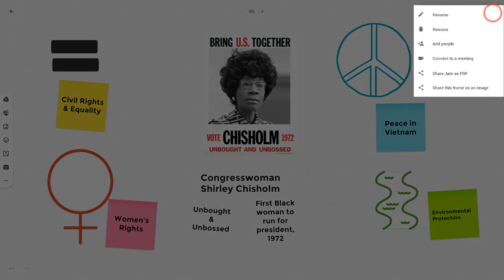Now let's talk about the very most important button: the three dots. Let me demo why. First I'll show you why it's the most important, and then I'll show you some added bonus features. The reason it's the most important is the true magic of Google Jamboard, which is collaboration.